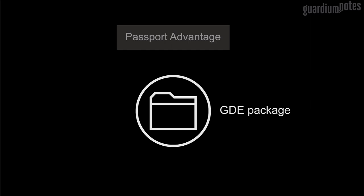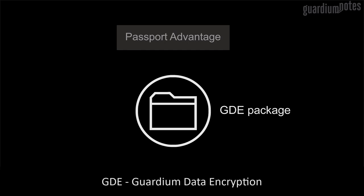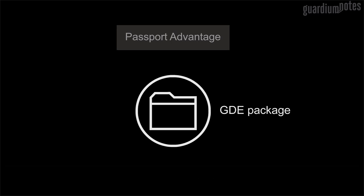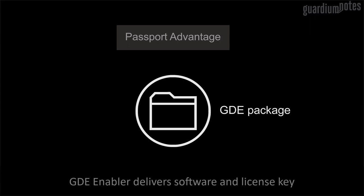This video shows the majority of tasks related to running the Guardian Data Encryption in version 3.0. GDE is a third-party solution and access to installation files requires generating an account on the IBM Partners website. The first installation task is to download the IBM GDE enabler from the IBM Software Access page.